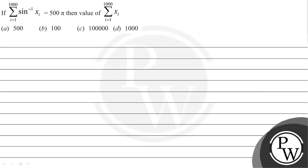Let's read the given question. The question states that if summation of sin inverse xᵢ, where i is varying from 1 to 1000, is equal to 500π, then find the value of summation of xᵢ where i is varying from 1 to 1000. The options are given below.